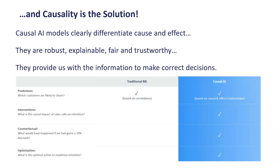Causal models can ask interventional questions: if I make a change, what will the outcome be? Or, what would have been the outcome had I done something differently? These are fundamentally very different from the purely predictive questions that machine learning models normally answer.